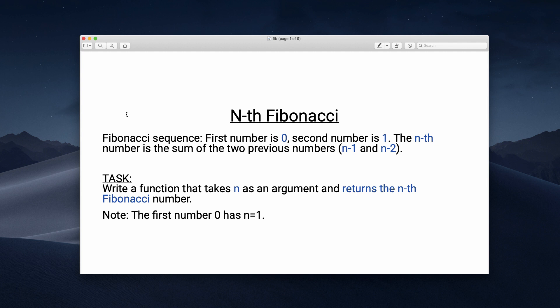Here we have the task. The Fibonacci sequence is defined as follows: the first number is zero, the second number is one, and the nth number is the sum of the two previous numbers — n minus one and n minus two. The task is to write a function that takes n as an argument and returns the nth Fibonacci number. As a note, the first number zero has n equals one.